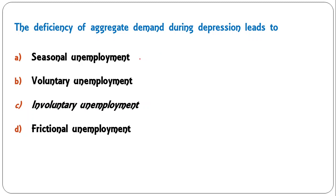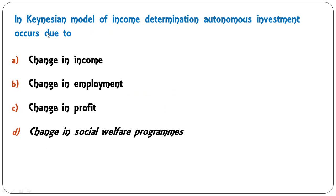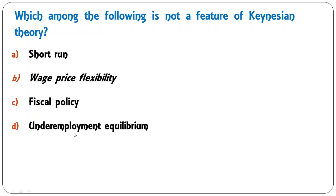Next question: the deficiency of aggregate demand during depression leads to seasonal unemployment, voluntary unemployment, involuntary unemployment, or frictional unemployment? The correct answer is involuntary unemployment, which was identified by Keynes. So C is the correct answer. In the Keynesian model of income determination, autonomous investment occurs due to change in social welfare programs — investment independent of income, usually done by government. So D is the correct answer.